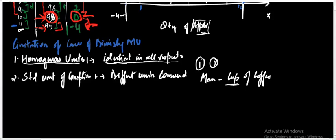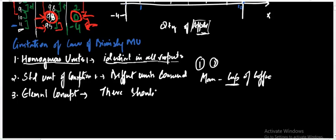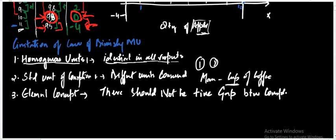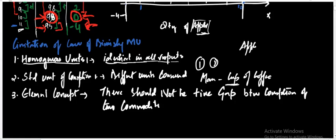The third limitation is the element of continuity. There should not be a time gap between the consumption of two units. One standard unit of consumption should follow the other without any time gap — only then is this law applicable. For instance, if you consume one apple in the morning and another in the afternoon, this law will not be applicable. There has to be continuous consumption over a period of time.